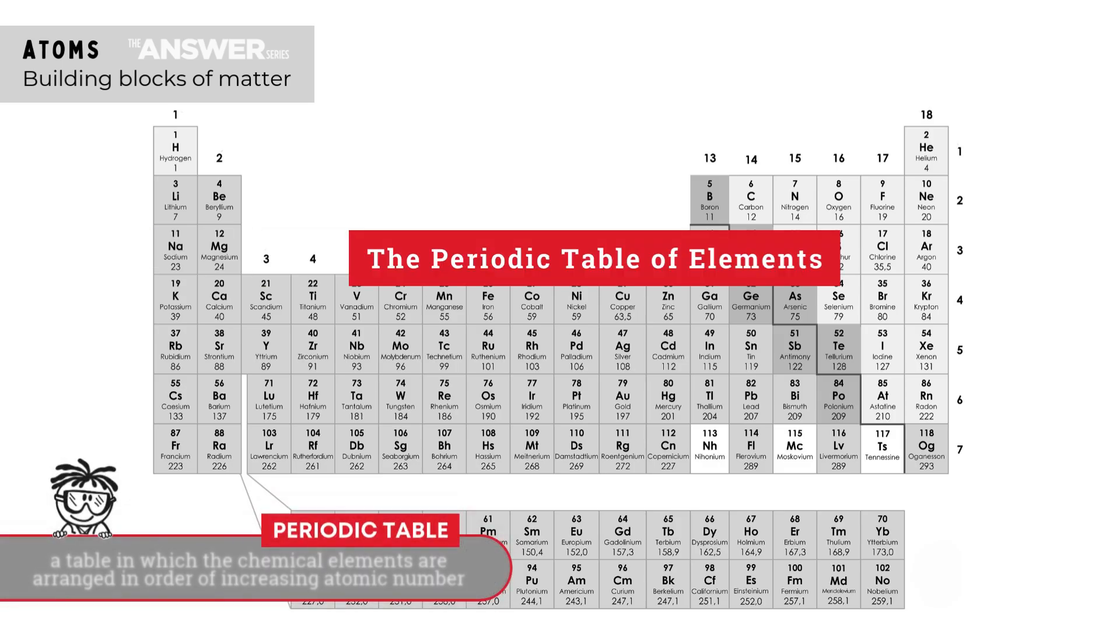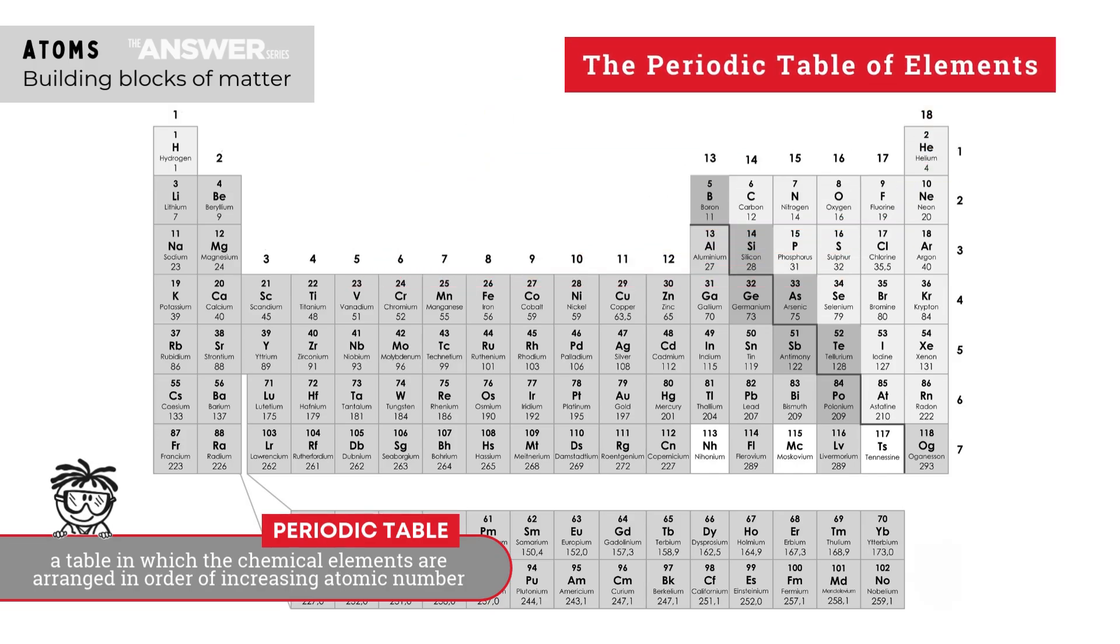There are one hundred and eighteen known elements in total and they're all listed on the periodic table of elements. All the atoms of an element are identical, but they differ from the atoms of other elements.